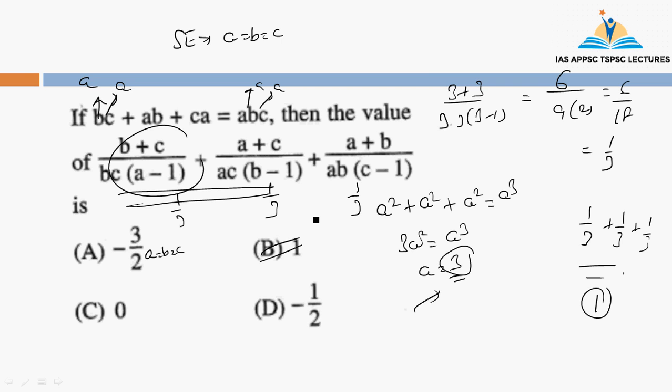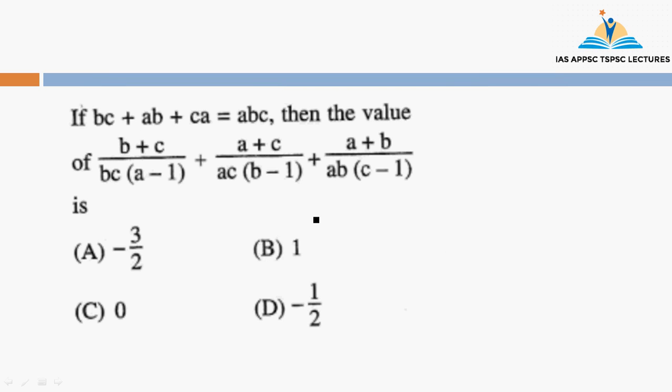We have to calculate very simply. We have to do the practice. We have to calculate with speed. Within 10 seconds we have to calculate the speed. For example, if b equals c equals a, then we have to substitute. Here a into b into c becomes a into a into a, which we need to calculate as a cubed.